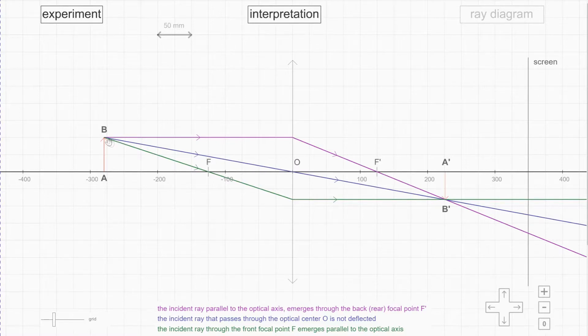And then pass through here. So from here you will have an intersection point. That will be the tip of the image and that will be the position of your image A prime B prime.